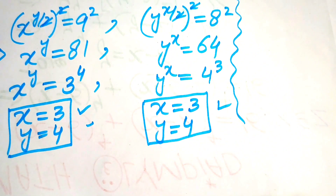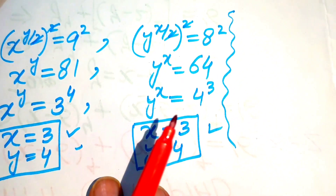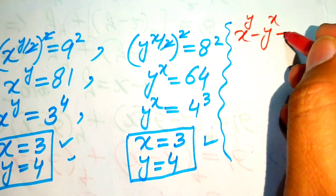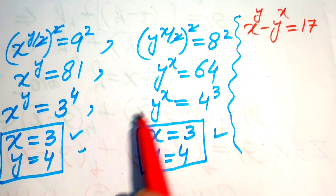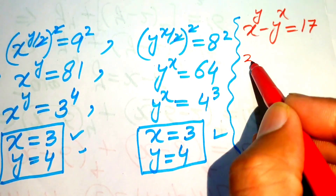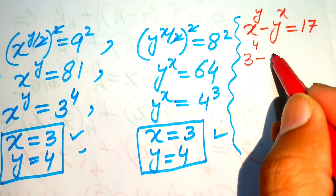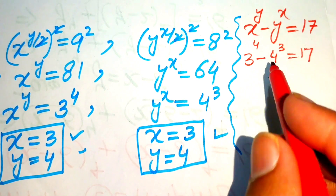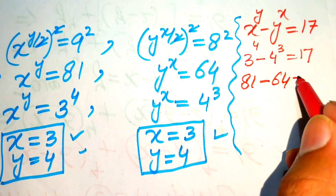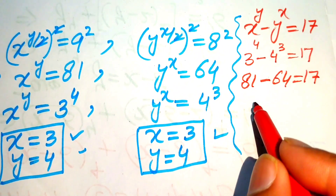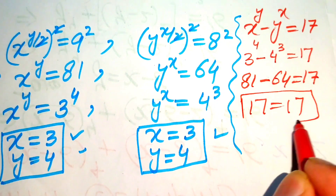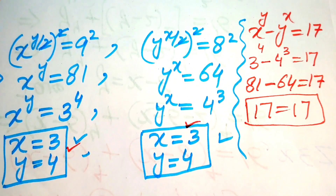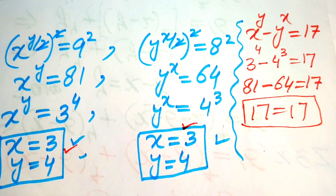Now we check whether our final answer satisfies the given question. The question states x to the power of y minus y to the power of x equals 17. Substituting x equals 3 and y equals 4: 3 to the power of 4 minus 4 to the power of 3 equals 81 minus 64 equals 17. This confirms the values of x and y satisfy the given equation. Thank you so much for watching this video, please subscribe to my channel for more exciting videos.